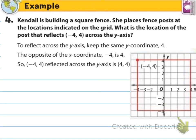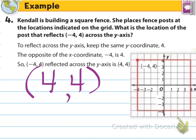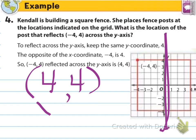Here's another example. Kendall is building a square fence and places fence posts at locations on a grid. What is the location of the post that reflects negative 4 comma 4 across the y-axis? Across the y-axis means the y stays the same at positive 4, and the x will be the opposite — so positive 4. Across the y-axis: y stays the same, x is the opposite.